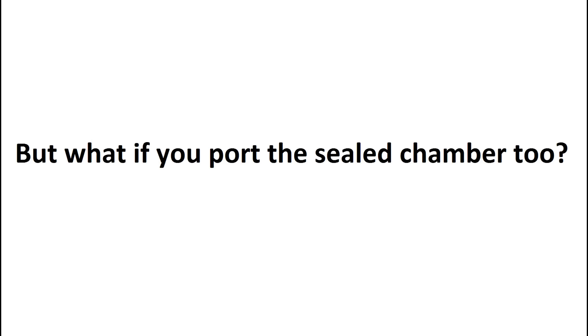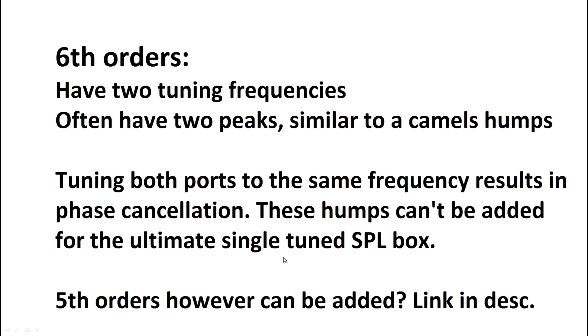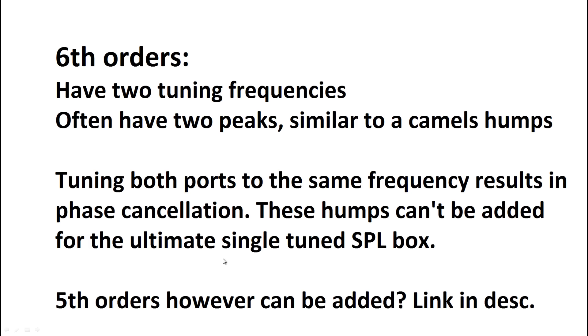But what if you want to port the sealed chamber? So you've just tuned that to 60 but you've still got this huge slide. What if you want some energy down at 20 hertz? Well you port the sealed chamber at around 20 hertz and you make yourself a sixth order. So sixth orders have two tunings as you can see two different ports, two different enclosures, two different tunings.